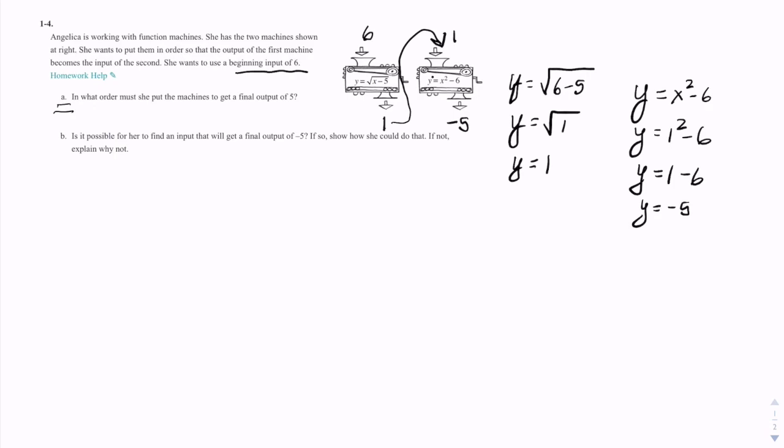Let's see what happens now if we use the other order. Instead, let's put the 6 into the second machine first. So I'll feed a 6 in here. That would be y equals 6 squared minus 6. Y equals 6 squared is 36 minus 6. Y equals 30.